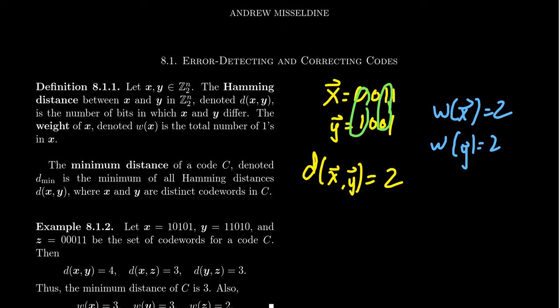Given a code, right, remember a code is a set of code words. Code words are elements that belong to Z2N. There's these binary sequences here. The minimum distance of a code is going to be the smallest distance between two vectors in that code.